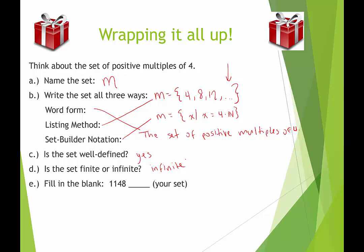We're going to fill in the blank. 1,148. So the question is, is this an element of the set or is it not? Is 1,148 a positive multiple of 4? Yes, it is. So we would say 1,148 is an element of M.